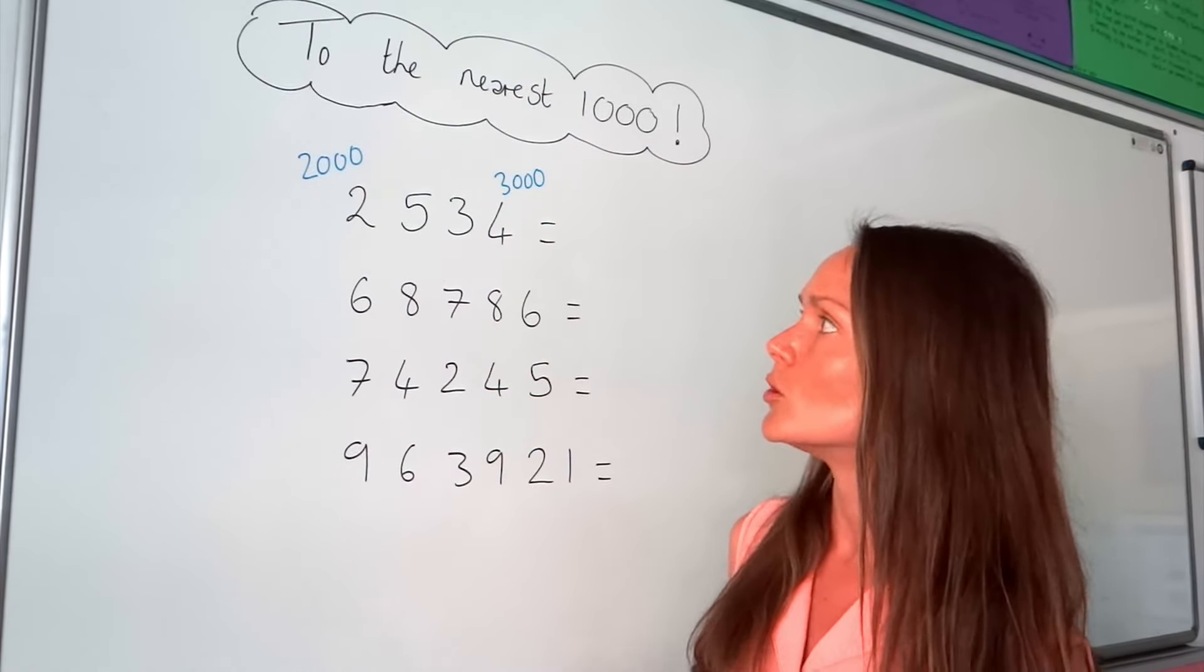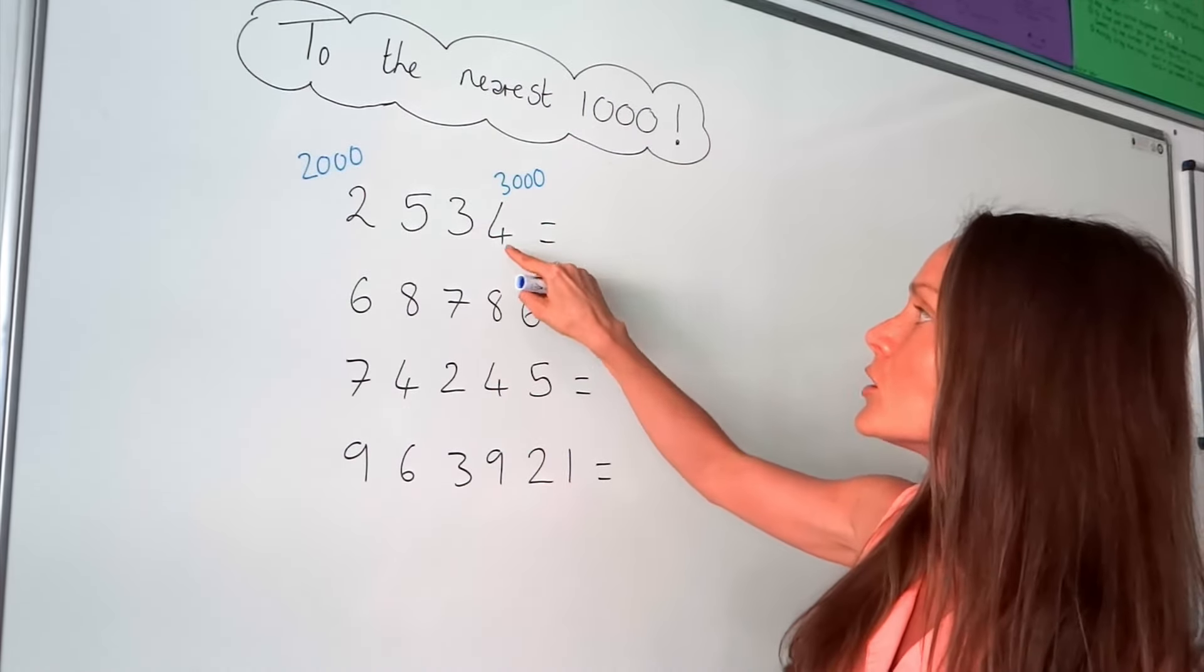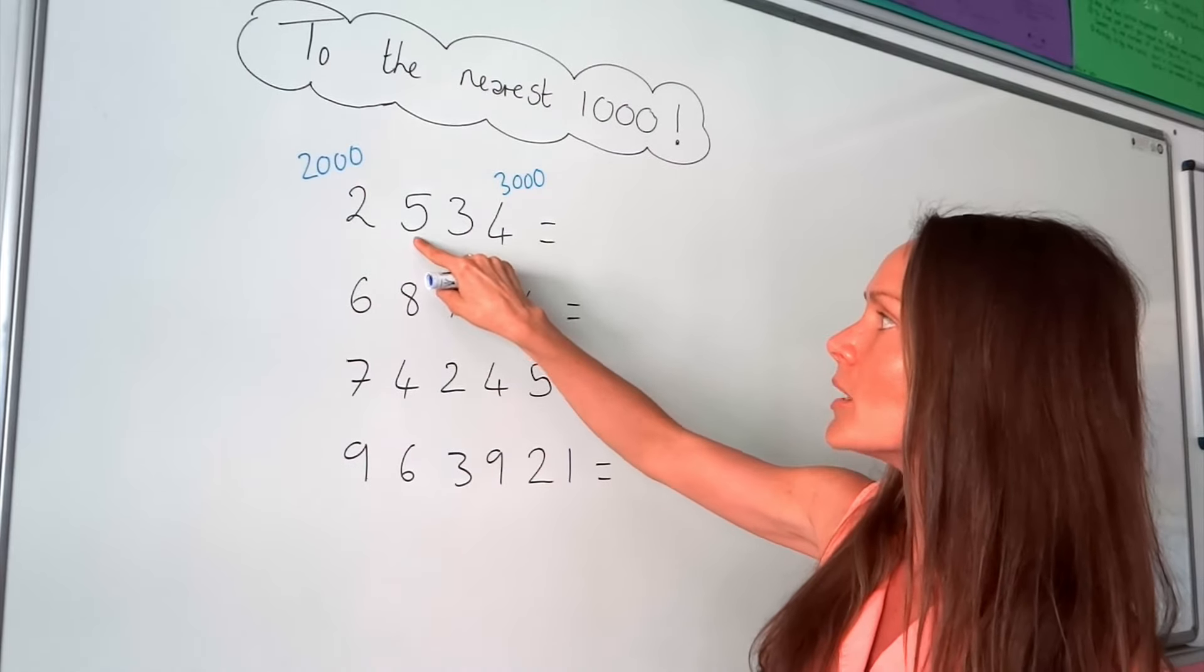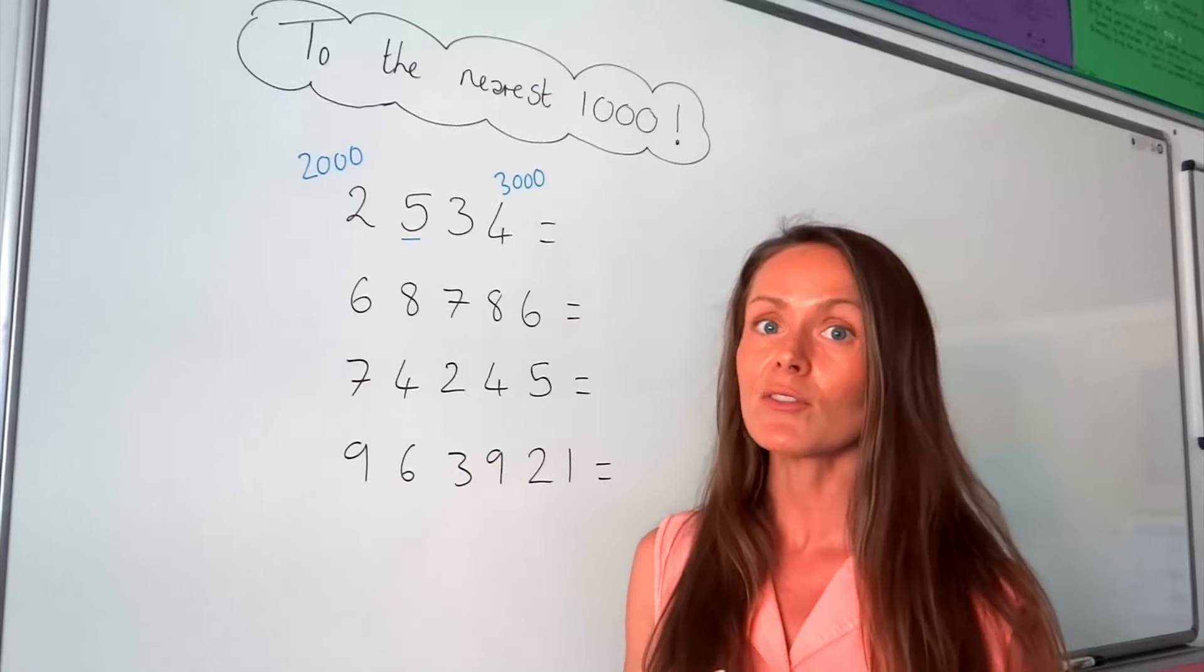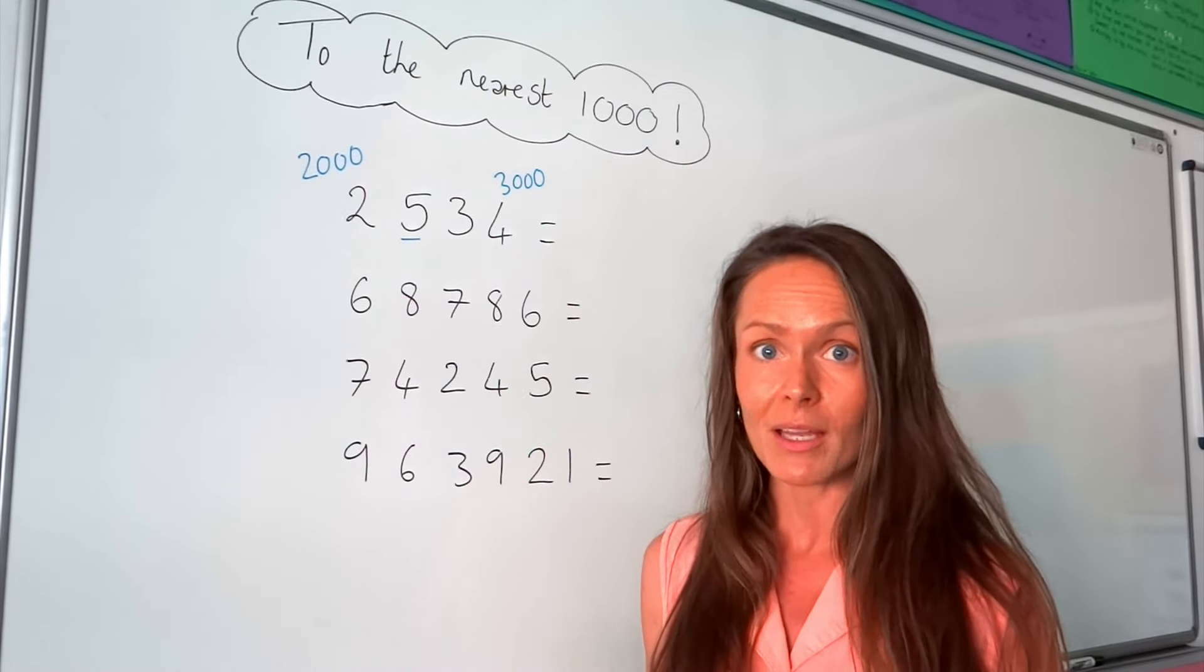But if you're not sure, what you need to do is check the third from the end number. So this one here, third from last. And remember, when you're rounding, if you see the number 5 or a number that's bigger than 5, then you need to round up.